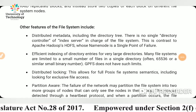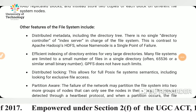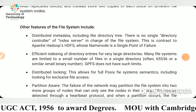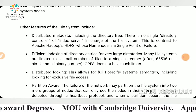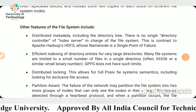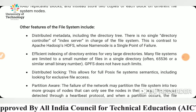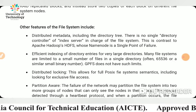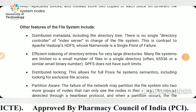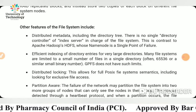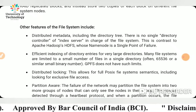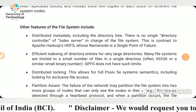GPFS supports efficient indexing of directory entries for very large directories. Many file systems are limited to a small number of files in a single directory, often 65,536 or a similar small binary number. GPFS does not have such limits. It also supports distributed locking, allowing full POSIX file system semantics including locking for exclusive file access.